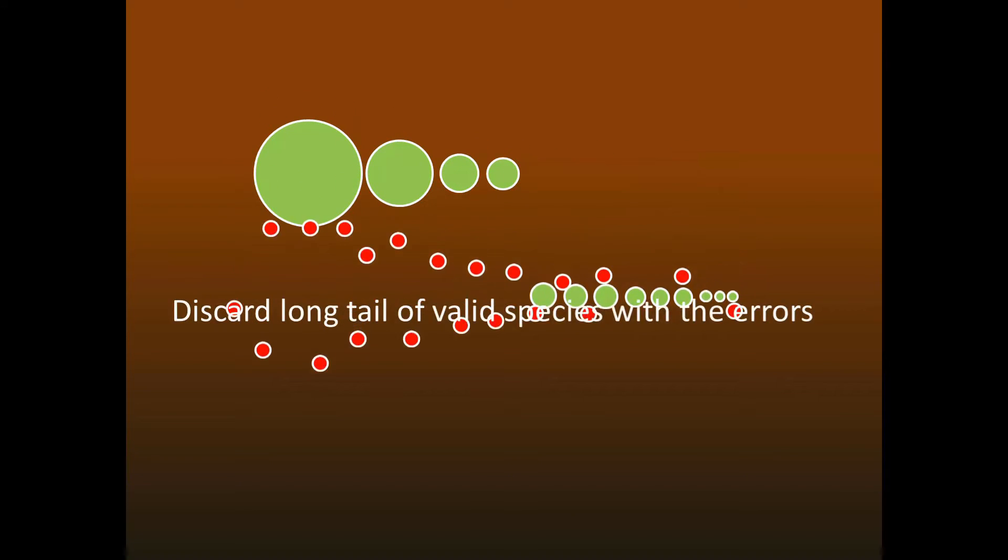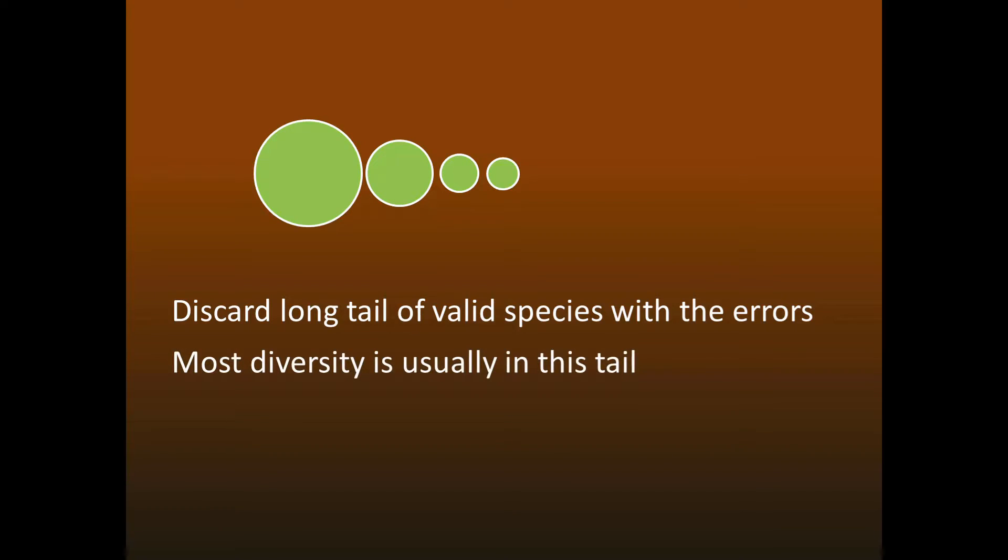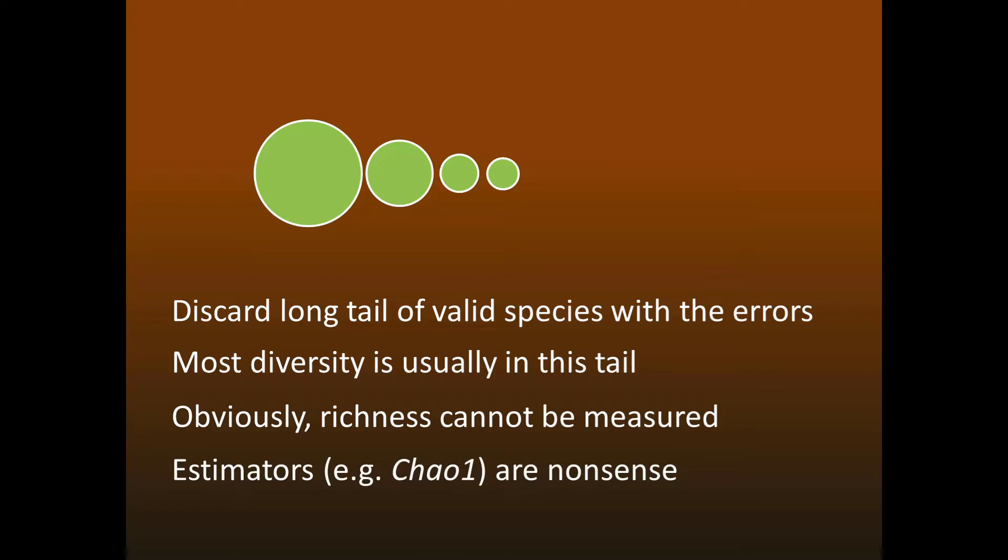On the other hand, if we use a method like UPARSE, DADA2, or UNOISE, which gives us good sequences, then we may be discarding a long tail of valid species along with the errors. Either way, it's obvious that you can't measure richness, which is the number of species or OTUs in your sample. And it's also obvious that you can't use estimators such as Chao-1 to extrapolate to the full diversity of the ecosystem, because these estimators need reliable abundances of detected rare species.